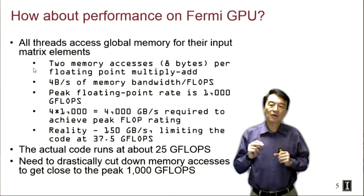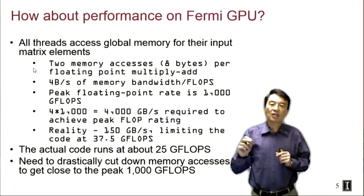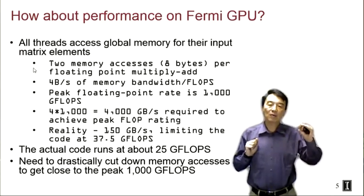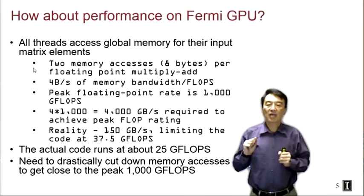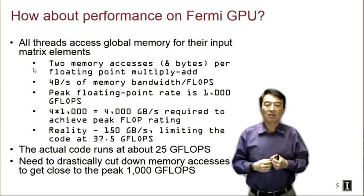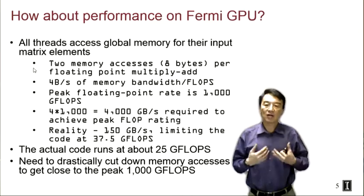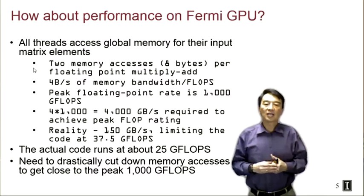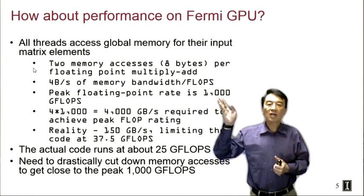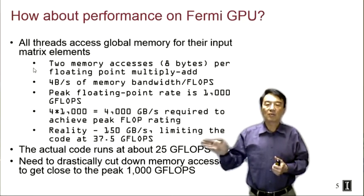If the operand values are four bytes each, then to do every floating-point operation we need four bytes of data from global memory. To do one FLOP per second, we need to access four bytes per second from global memory. The Fermi GPU is capable of executing 1000 gigaflops — one teraflop — of floating-point operations per second. This means we would need to access 4 × 1000 = 4000 gigabytes per second from global memory.